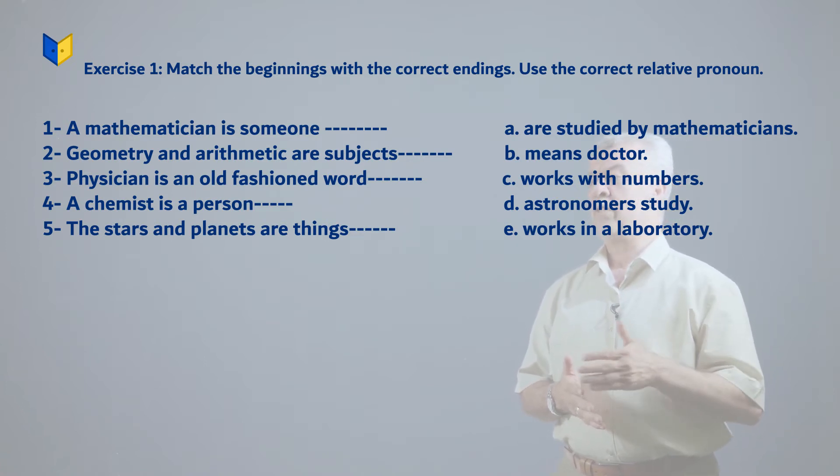Let's begin. Number one: A mathematician is someone. Is someone, we need which or who? Not which, that's wrong. Who is correct. So a mathematician is someone who does what? Which answer goes with it?